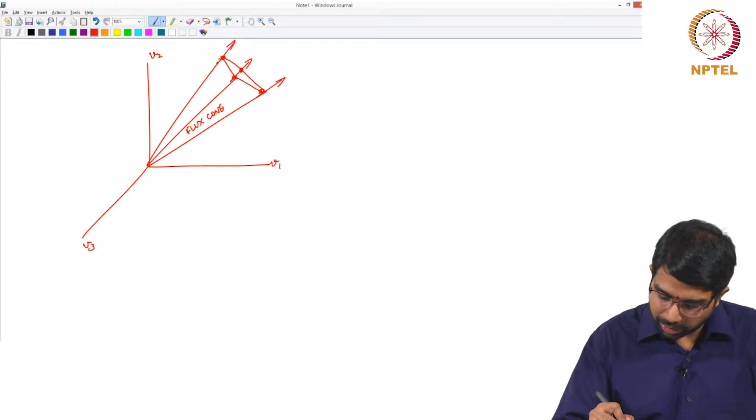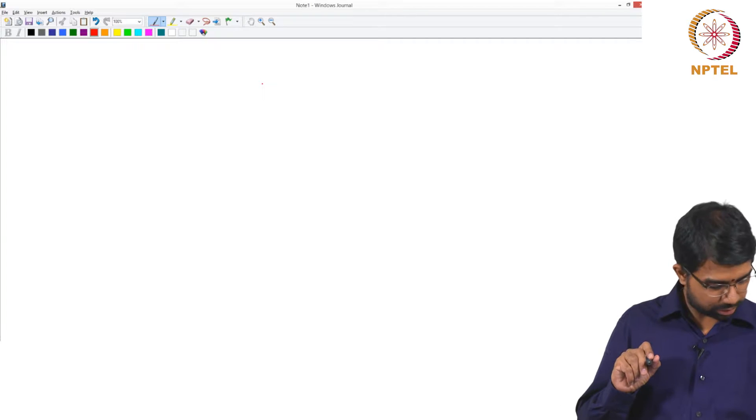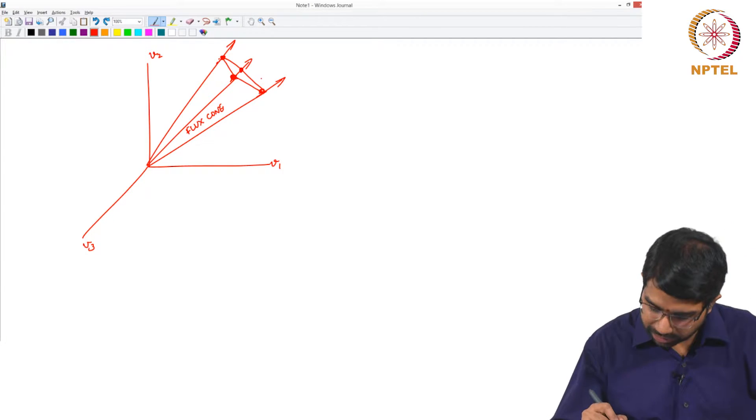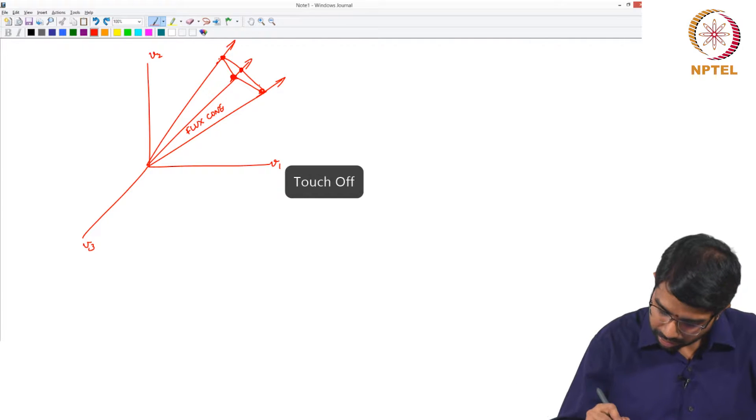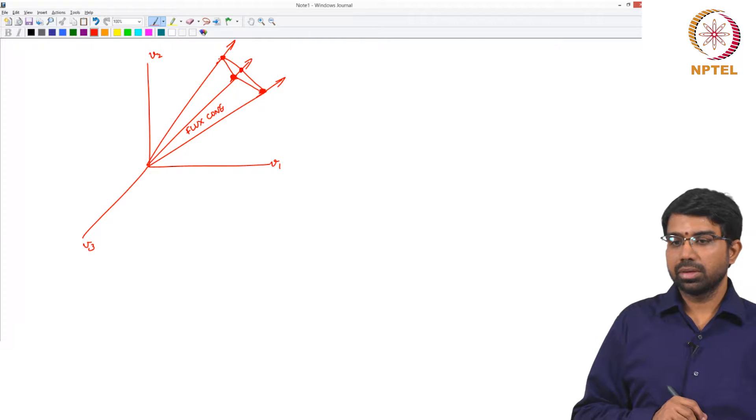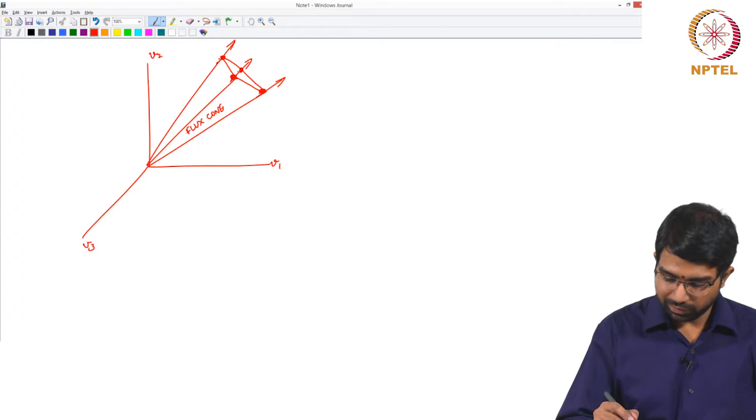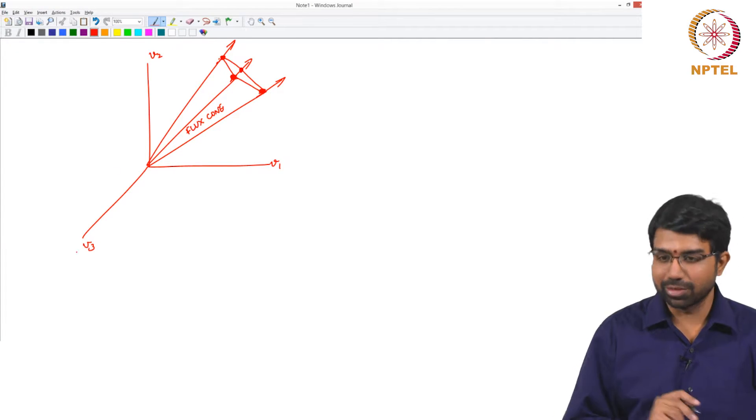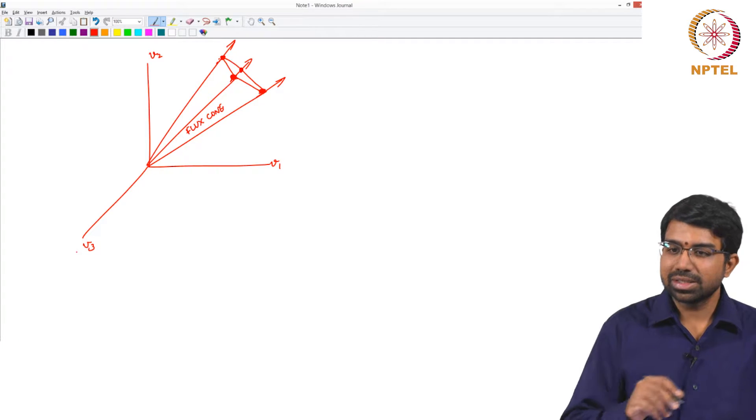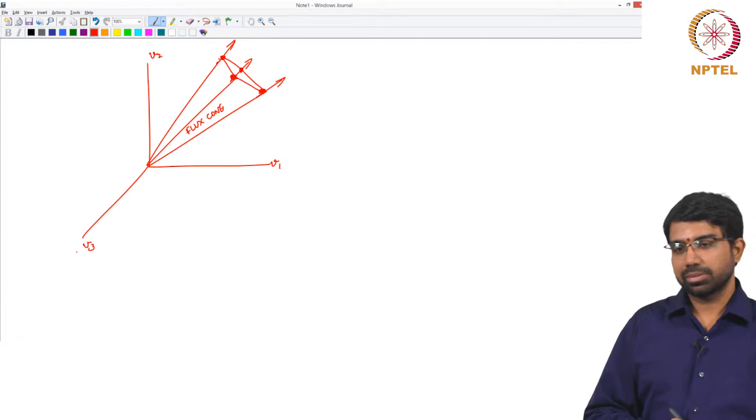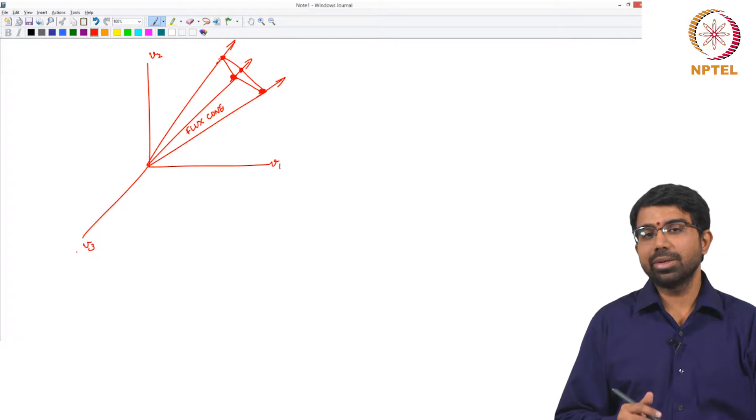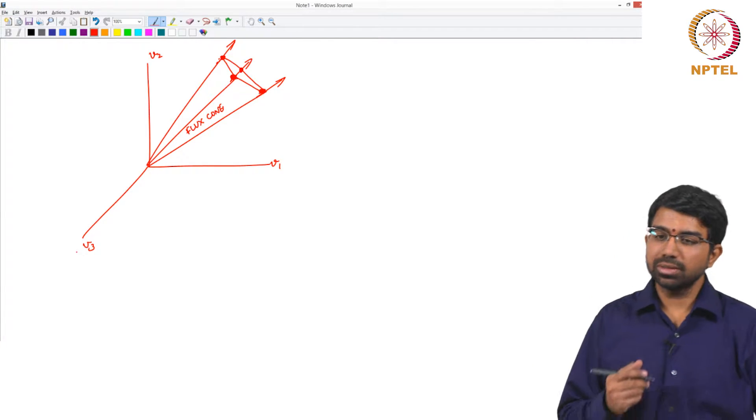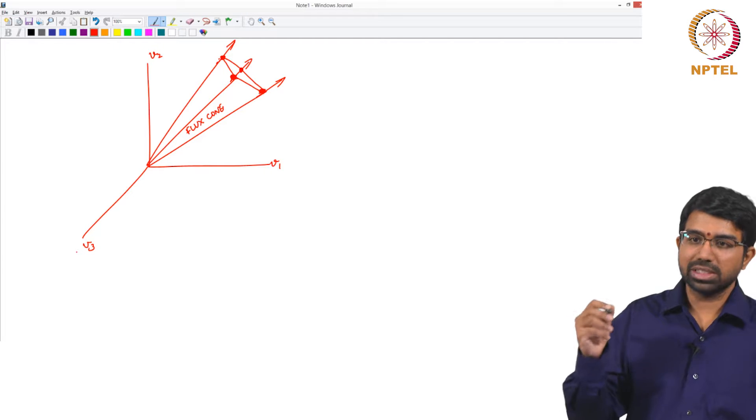But for each of these optima you can see all of these may be equally good optima. You can obviously say they have different values of V1, V2, V3 but they might end up having the same objective function. In fact in linear programming they will end up having the same objective function. If you have one best value that is what you will always get.